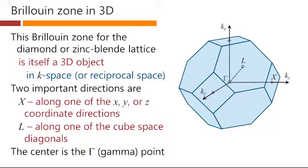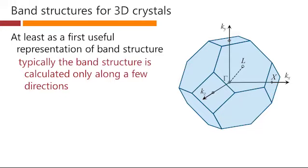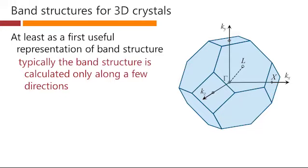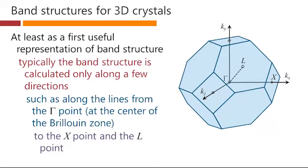And the center of the Brillouin zone is what's called the gamma point. So at least as a first useful representation of band structure, what we typically do is calculate the band structure along the particularly interesting directions. So this would be one of them, and that would be equivalent to this direction or this direction. And this space diagonal direction, the direction out to the L point here, or the L direction, is another interesting direction. So we calculate the band structure along this line, for example, and then to the X point, and also out to the L point here. We could calculate the band structure along any other lines as well, but those are the two ones typically used first of all for a structure such as this zinc-blende Brillouin zone.